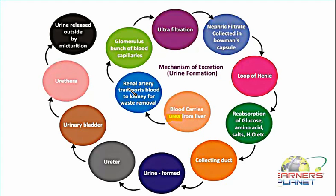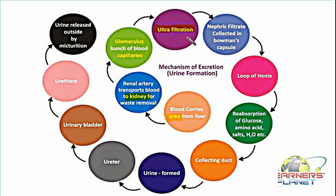After being transported through the renal artery, the blood is transported to the kidney. Inside the kidney, the functional unit is the nephron. Inside the nephron, the glomerulus — there are millions of nephrons in the kidney. These glomeruli are bunches of blood capillaries involved in the process of ultrafiltration, meaning the blood is totally filtered here and the filtrate produced is known as the nephric filtrate.